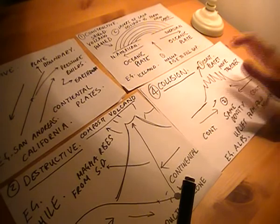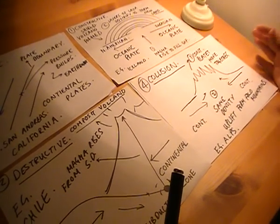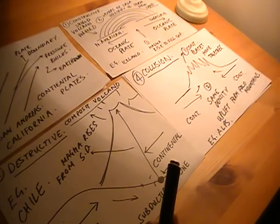We don't really get too many volcanoes at collision plate boundaries because there's no magma, but we might get earthquakes that are quite deep.